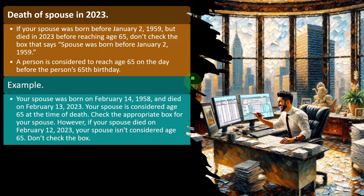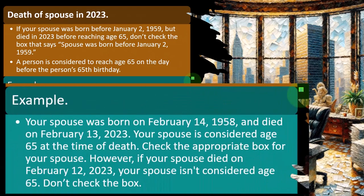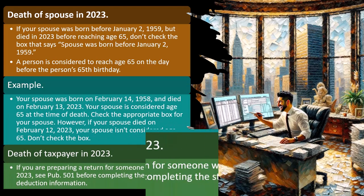For example, if your spouse was born on February 14th, 1958, and died on February 13th, 2023, your spouse is considered age 65 at the time of death — check the appropriate box. That could give you a benefit from a higher standard deduction. However, if your spouse died on February 12th, 2023, the spouse isn't considered age 65. It's somewhat arbitrary — they have to draw the line somewhere — so don't check the box in that case.